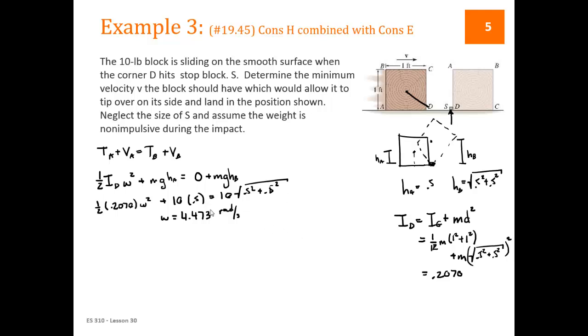So the block has to be rotating right after the collision with an omega of 4.473 in order for it to flip over the little block. Now the question is, how fast did the block have to be moving in order for it to start rotating at 4.473? So that's a conservation of momentum problem. We're going to look at H1, which is right before it hits the block, being equal to H2, which is right after it hits the block. So H2 is easy, H2 is ID times omega, and we know both of those things.